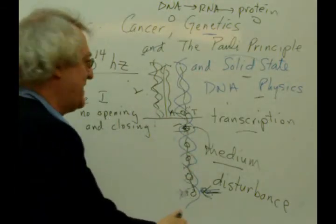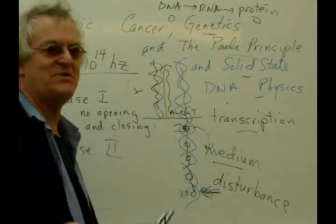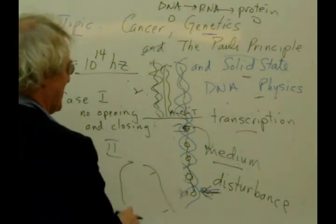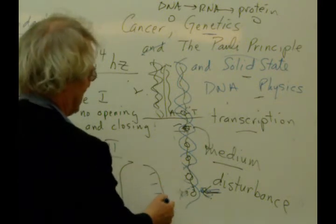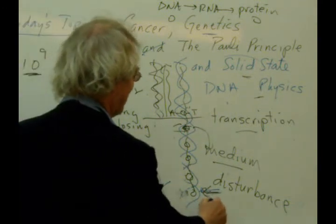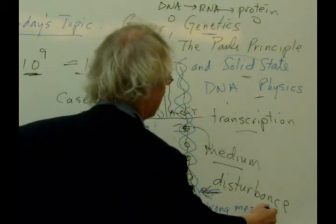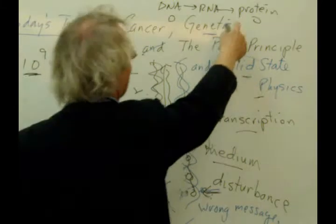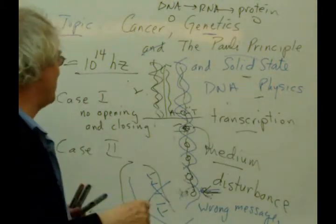Case two. You have opening and closing, but you've got the wrong code. So, it opens, but this code is messed up somehow, because it's lost this part. It codes a bit, maybe. Now you have the wrong message. When you have the wrong message, you're going to have the wrong protein. That won't be properly made.